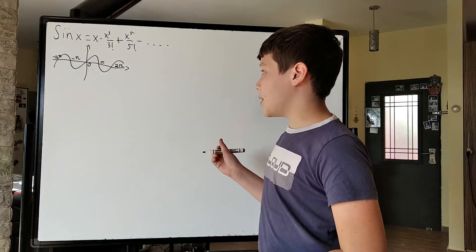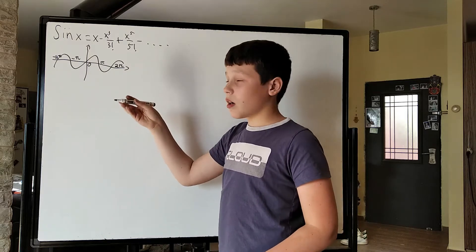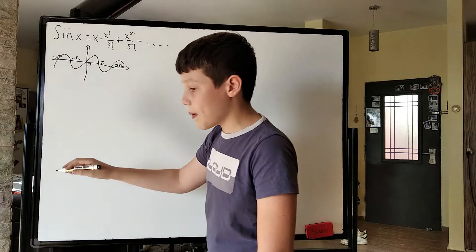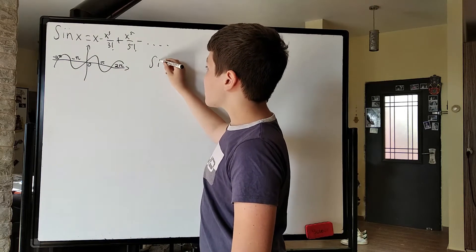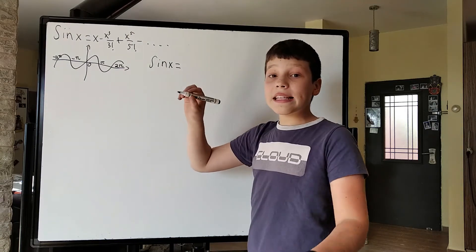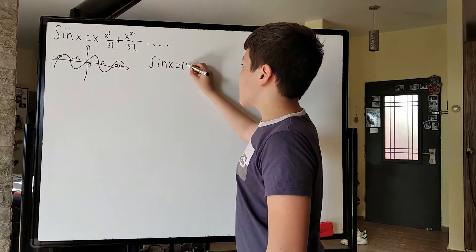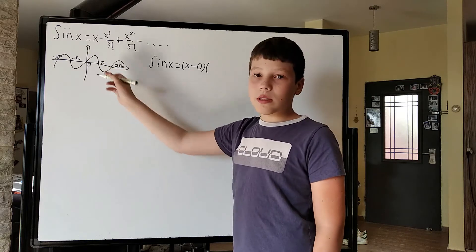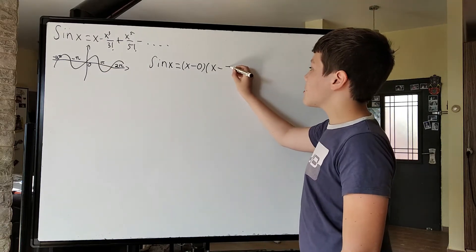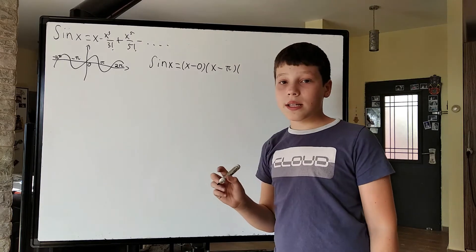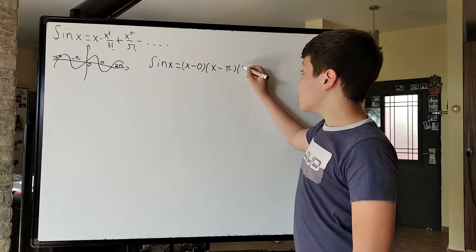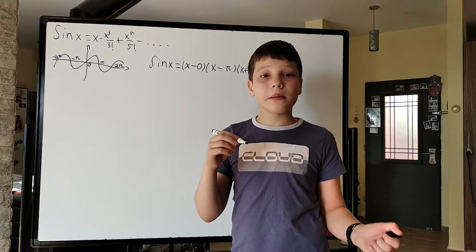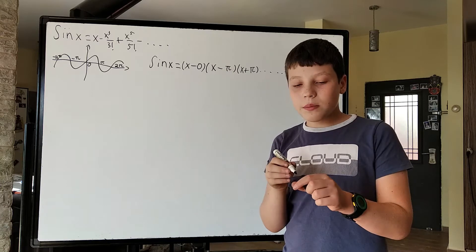All of the zeros of sine x are multiples of pi: zero, pi, 2 pi, 3 pi, also the negatives — negative pi, negative 2 pi, negative 3 pi. Meaning we can write sine x as a product of x minus each zero. So it's going to be x minus zero, then times x minus pi, then x minus minus pi which is x plus pi. This pattern continues: x minus 2 pi times x plus 2 pi, times x minus 3 pi times x plus 3 pi, and so on.